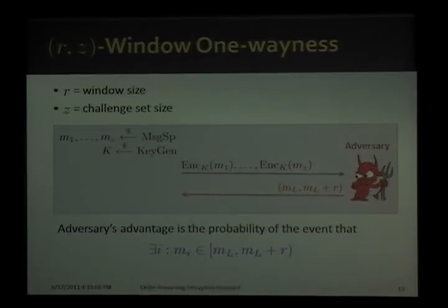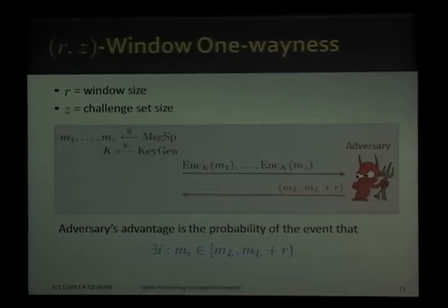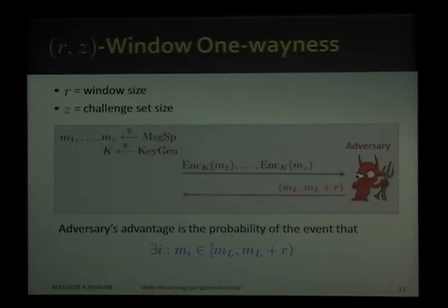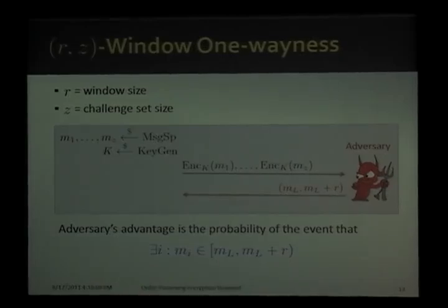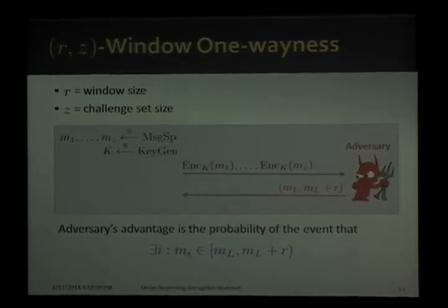The first is RZ window one-wayness, parametrized by two variables R and Z. R is the window size and Z is the challenge set size. The security experiment: we sample Z uniformly random messages from the message space and a random key, then encrypt each message and send those ciphertexts to the adversary. The adversary is tasked with outputting a plaintext window of size R. The adversary's advantage is the probability that one of the challenge messages occurs within that plaintext window — essentially measuring the probability of inverting one of Z encryptions of random plaintexts to within a window of size R.